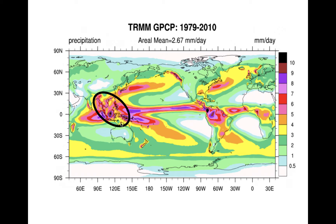Note in contrast how dry the region north of the Himalayas is. Dry air, which is not supportive of the deep convection that develops during an active monsoon, is present there. The Himalayas act as a barrier against that dry air reaching lower elevations south of the range.